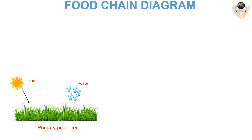At the base of the food chain lie the primary producers. The primary producers are autotrophs and are most often photosynthetic organisms such as plants, algae, or cyanobacteria.